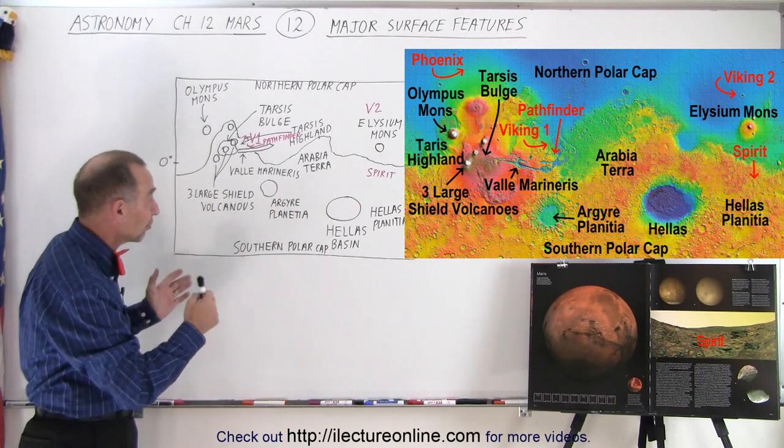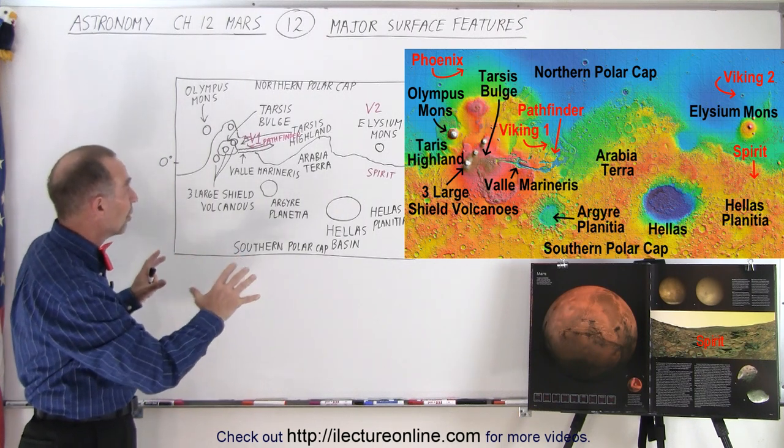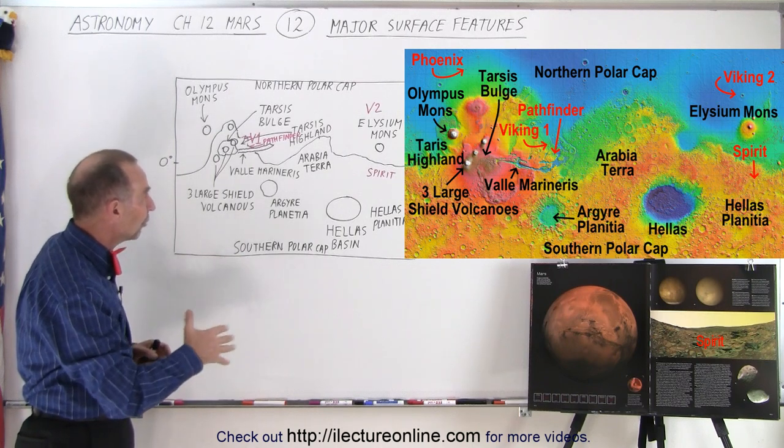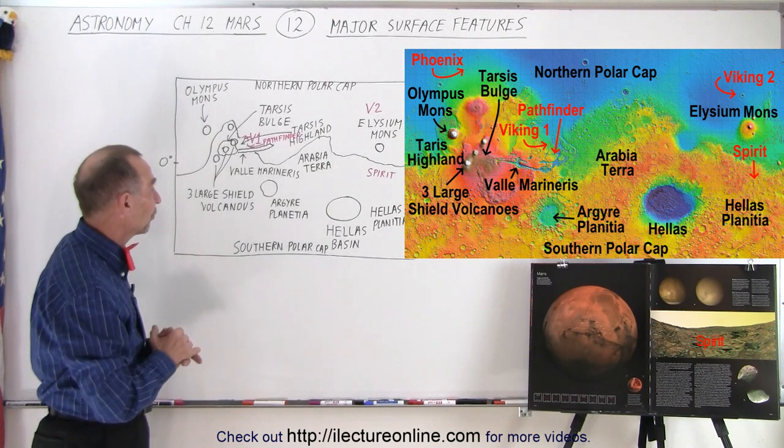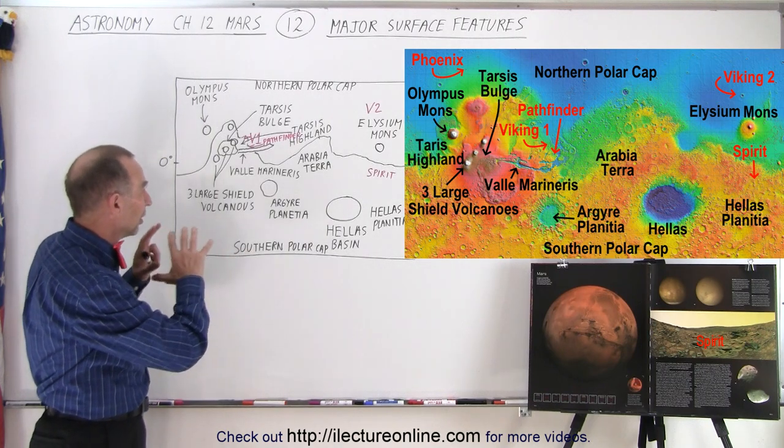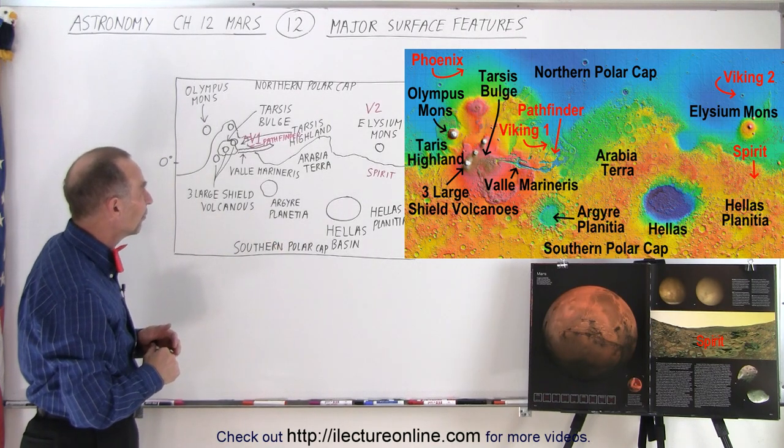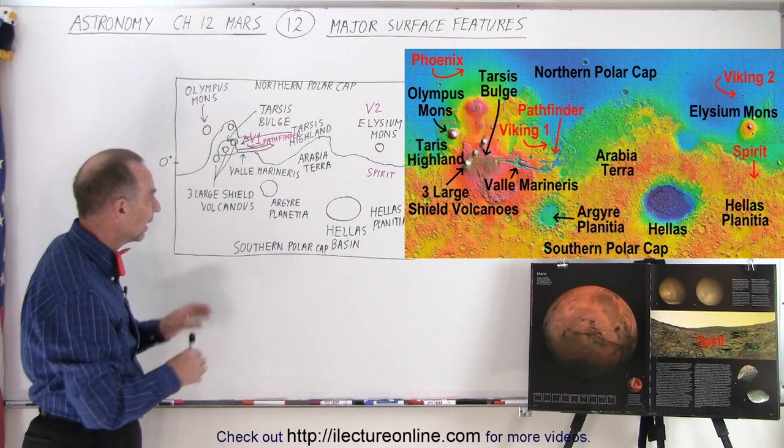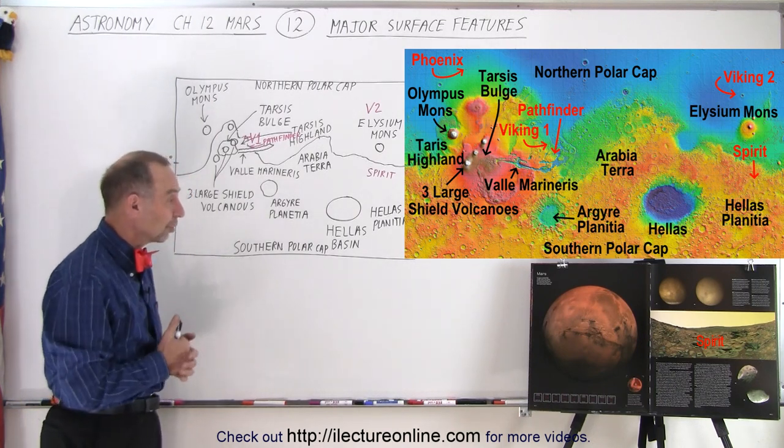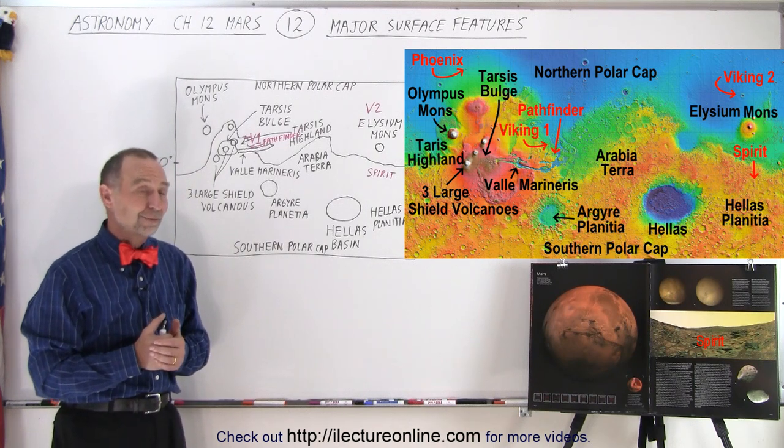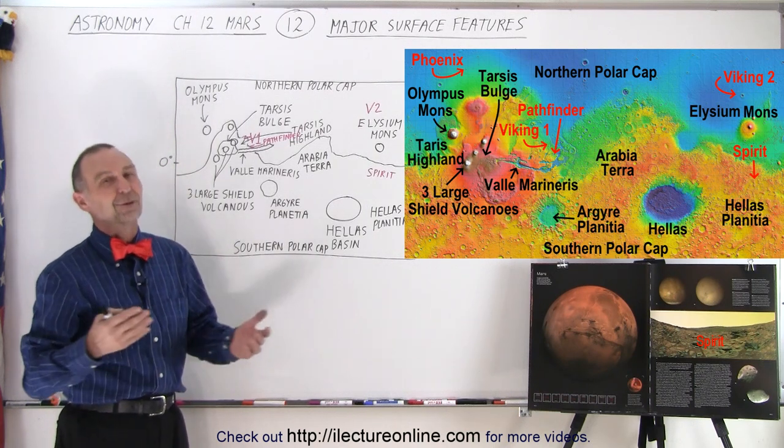So those are the major surface features on Mars. There's many of them. It's a very interesting planet that's not obscured most of the time by clouds or by dust. Once in a while, there's a huge dust storm that does obscure the surface for a while. But by and large, there's some amazing features to be seen on the planet. And we'll dive into that a little bit deeper in the videos to come to take a close look at some of these surface features. And that is Mars on a grand scale.